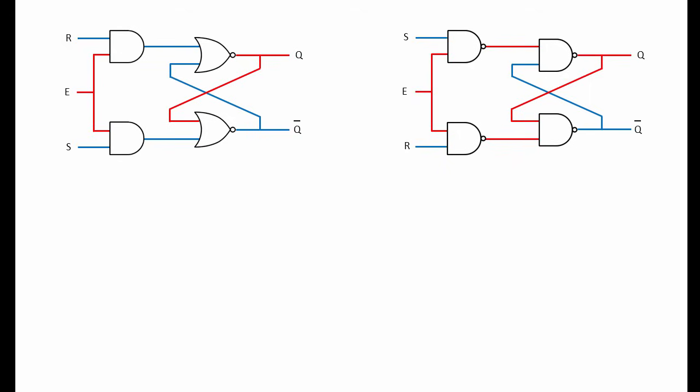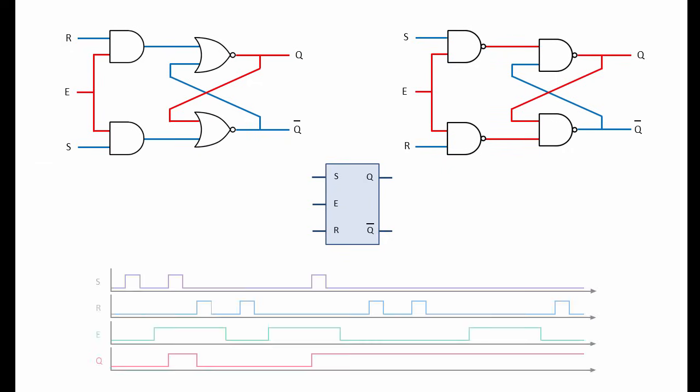A gated SR latch has an additional input E, which must be high before the latch will respond to any changes in S or R. The gated SR latch has its own symbol to simplify diagrams, and the behavior of a latch can be described by means of a timing diagram.